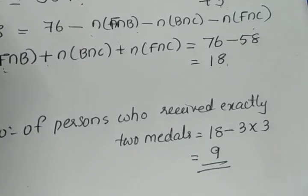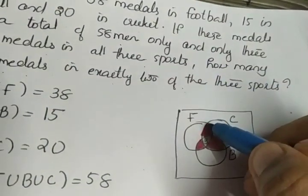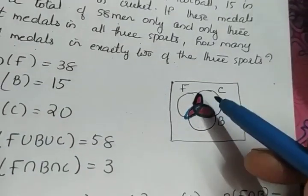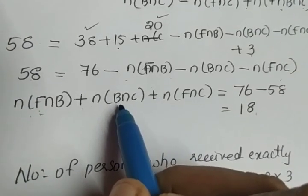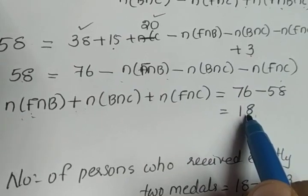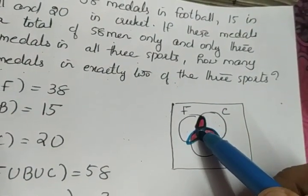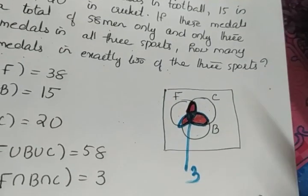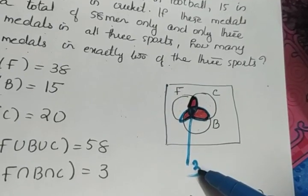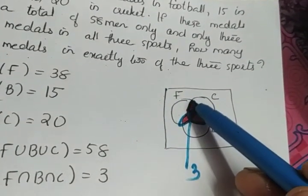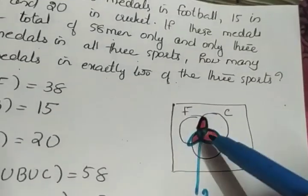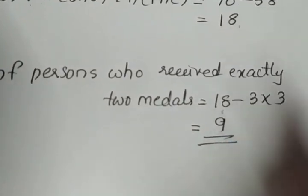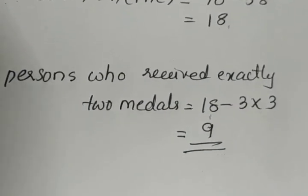To summarize: the total of the three pairwise intersection regions is 18. Within these, the common triple-intersection portion repeats thrice, and that number is 3, so 3 × 3 = 9. Subtracting 9 from 18, the number of people who received medals in exactly 2 of the 3 sports is 9. Thank you.